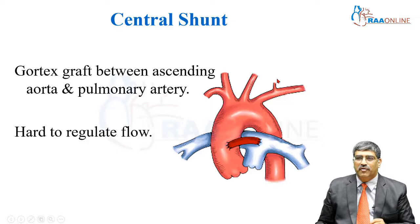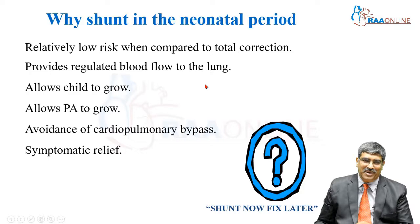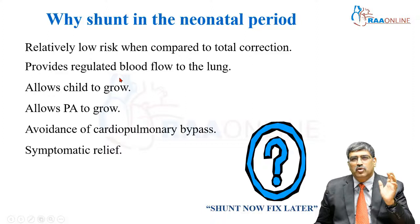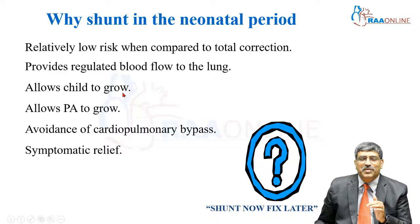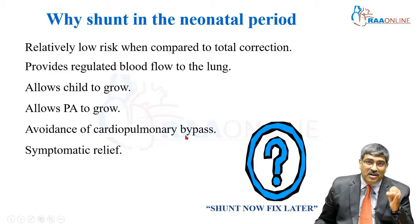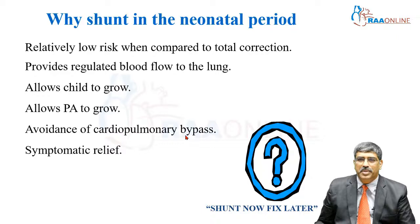It is going to be very difficult to regulate the flow — it might overflow. Why do you have to perform the shunt in the neonatal period? The shunt is a relatively low-risk procedure compared to intracardiac repair. It provides regulated blood flow — not too much flow to the lung, but regulated blood flow to the pulmonary arteries. Most importantly, it allows the child as well as the pulmonary arteries to grow, so intracardiac repair can be done with good results. It also avoids cardiopulmonary bypass and provides good symptomatic relief in the newborn period.